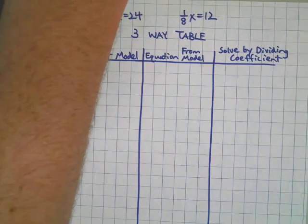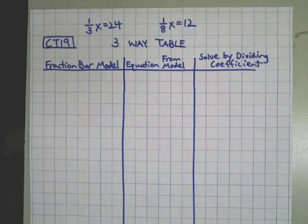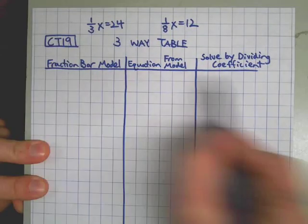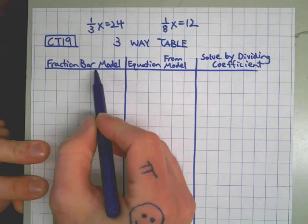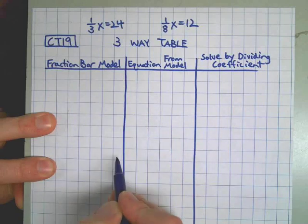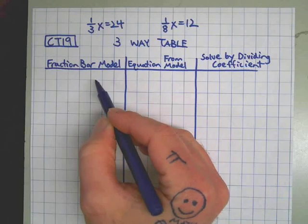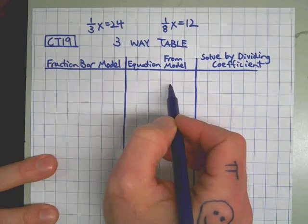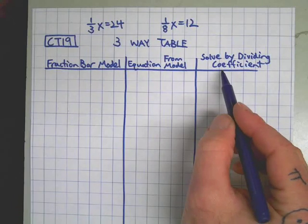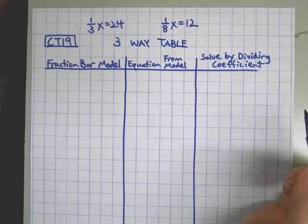I've written down the first two pieces of this problem. I figure two examples will be fine. Three-way table: we set it up sort of like a guess and check table. Big line across the top. Fraction bar model is going in the first section, then a line straight down. In the middle we're going to write an equation using the fraction bar model, so we need to make the fraction bar model first. We'll write an equation in terms of x, and then finally we'll write a different equation that has a coefficient in it that represents one part of the fraction bar model. We'll solve by dividing the coefficient.